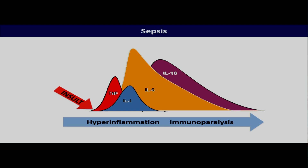At the same time, we also know that sepsis is a dynamic problem where things evolve. Patients may be very inflamed for a while and then become less inflamed, and then for a while they may even be immunoparalysed. And all this has implications for therapy and also for the development of organ dysfunction.